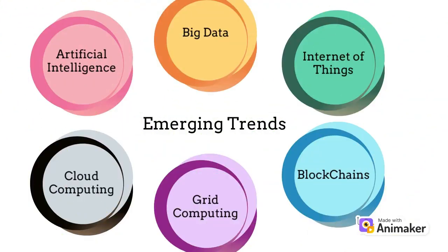We will learn about some emerging trends that will make a huge impact in the future on the digital economy and the interaction in digital societies. The six topics which we will cover in the upcoming videos are: Artificial Intelligence (AI), Big Data, Internet of Things, Blockchains, Grid Computing, and Cloud Computing. Even if you are not familiar with these terms now, don't worry — we will cover these topics in detail later, which will help you have a better understanding regarding the same.